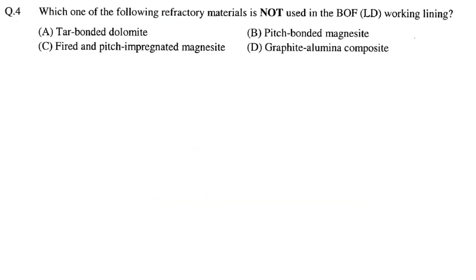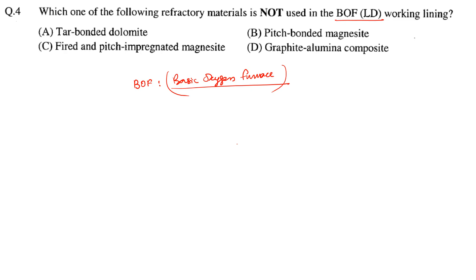Next question: which of the following refractory materials is not used in BOF/LD working lining? BOF means Basic Oxygen Furnace. In the steel-making process, the basicity is more than one, meaning the slag is basic in nature.